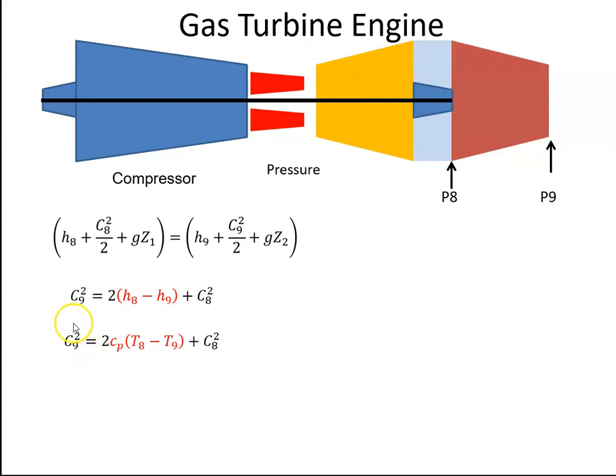We have a value here for the velocity of the gas at the nozzle. If we assume that the velocity here at the entrance to this nozzle is very small, that will go to zero and we're left with this equation.